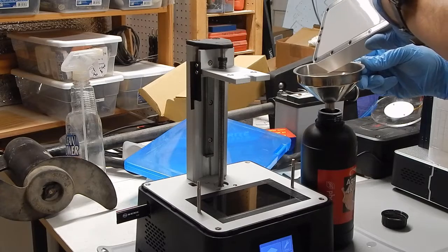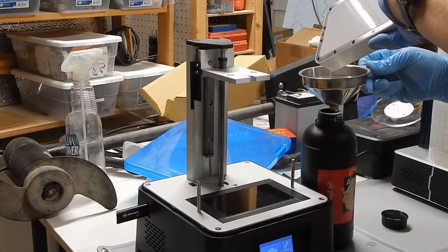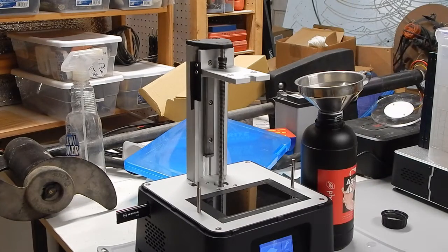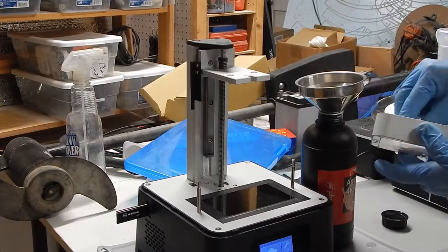I use a stainless steel funnel with a built-in screen so that I can pour the unused resin back into the container but still catch any floaters or cured resin that separated from the print.